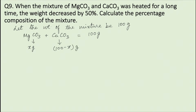Moles of magnesium carbonate in the mixture will be X divided by the molecular weight of magnesium carbonate, that is 84. Therefore, moles of magnesium carbonate = X/84. Moles of calcium carbonate will be the weight of calcium carbonate, that is 100 minus X, divided by the molecular weight of calcium carbonate, that is 100. So moles of calcium carbonate = (100 − X)/100.